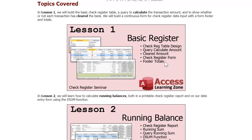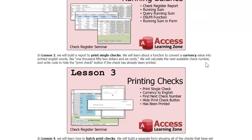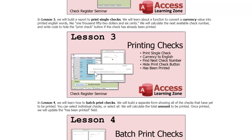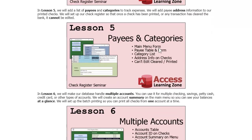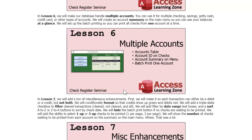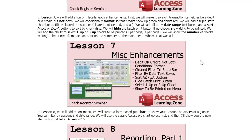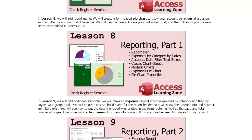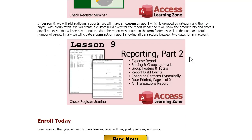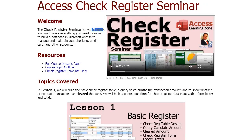The basic check register is essentially what we built in the free version. I've added a running balance, check printing so you can actually print checks, a currency-to-English function, batch check printing, different payees and categories to track expense categories, multiple accounts — multiple checking accounts, multiple savings accounts — sorting, filtering, searching, different check types (one-up, three-up), and various reporting like expenses by category. It's lots of cool stuff.